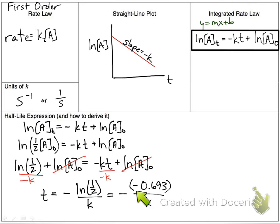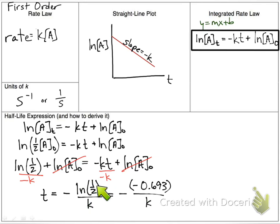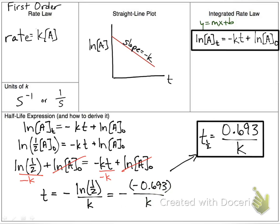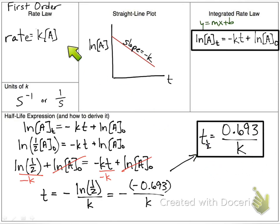Rewriting with the number: natural log of one-half equals negative 0.693. The negative cancels the negative, giving us the final equation: half-life equals 0.693 divided by k. This half-life equation is on your equations and constants sheet. If you know the k-value you can calculate half-life, or if you know the half-life you can calculate k.